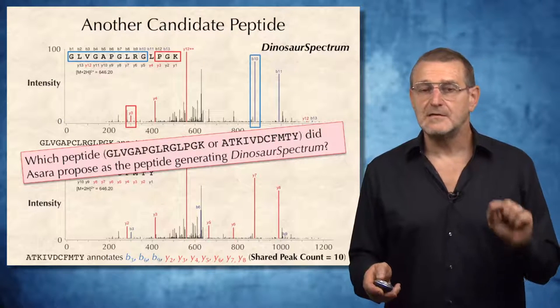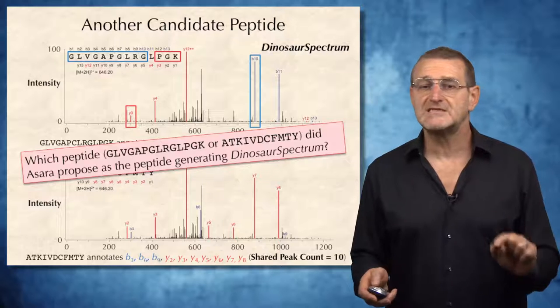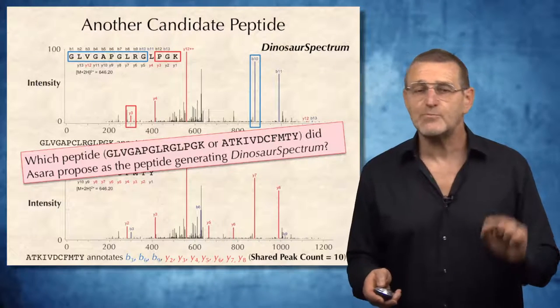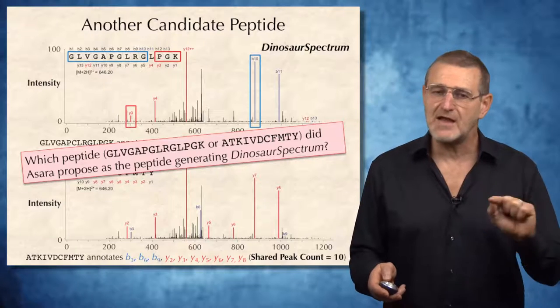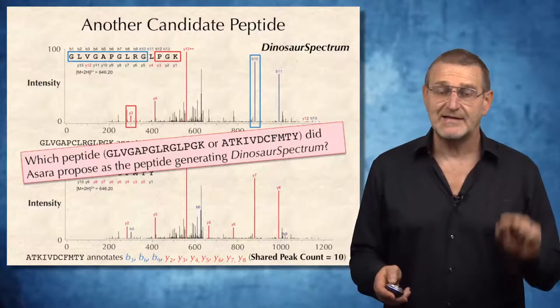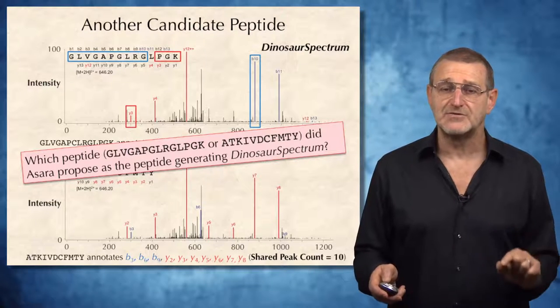We are able to annotate 10 rather than 6 peaks in this spectrum. Which peptide, the first one or the second one, did Azara propose as the peptide generating the dinosaur spectrum? You may be surprised with the answer, because it may look like the peptide at the bottom is definitely a better candidate for explaining the dinosaur spectrum.